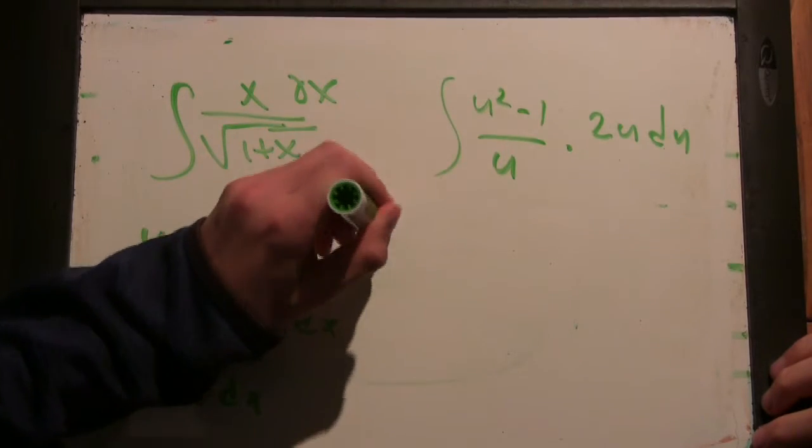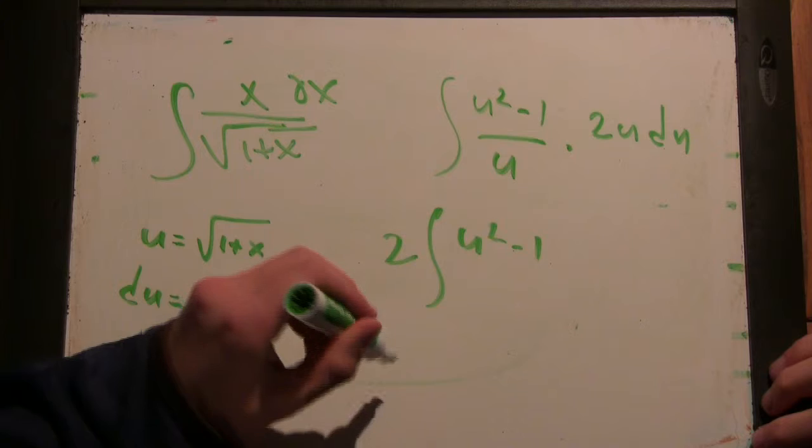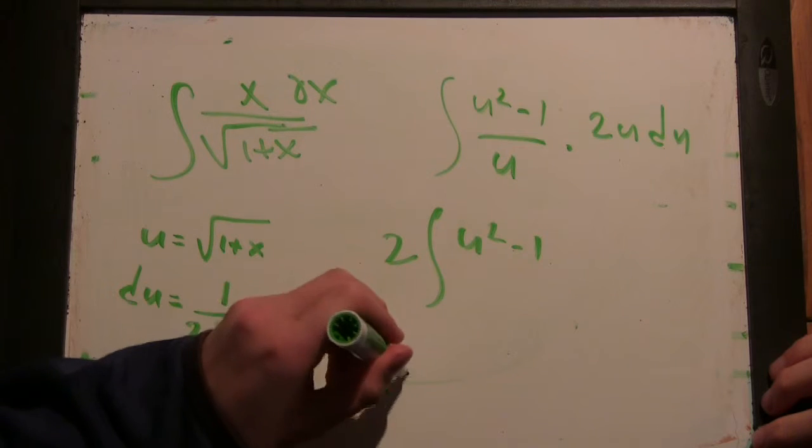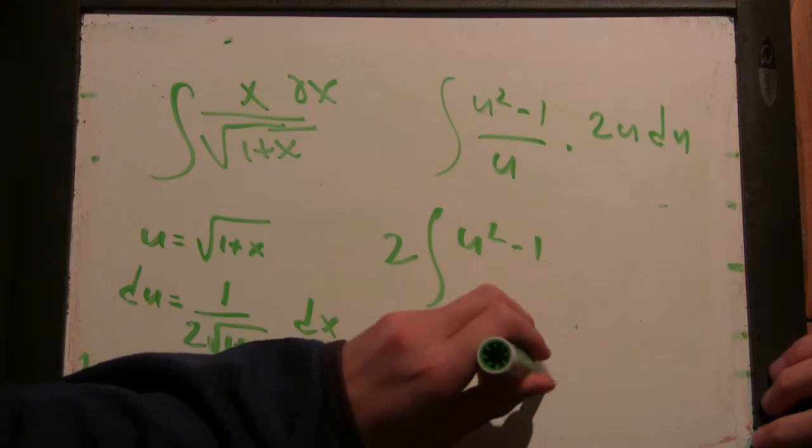So, this turns into 2 times the integral of u squared minus 1. So, 2u cubed over 3 minus 2u.